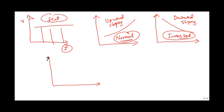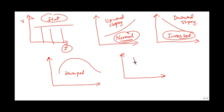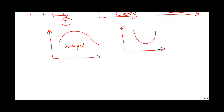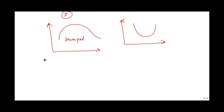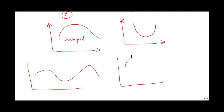You can also have a humped yield curve, and a U-shaped yield curve. These are some of the standard yield curve shapes, but they are not the only ones possible — you can have any shape of the yield curve.